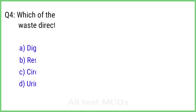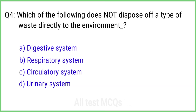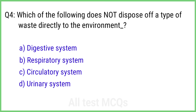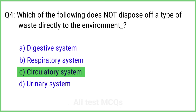Question 4. Which of the following does not dispose of a type of waste directly to the environment? The right answer is option C: Circulatory system.